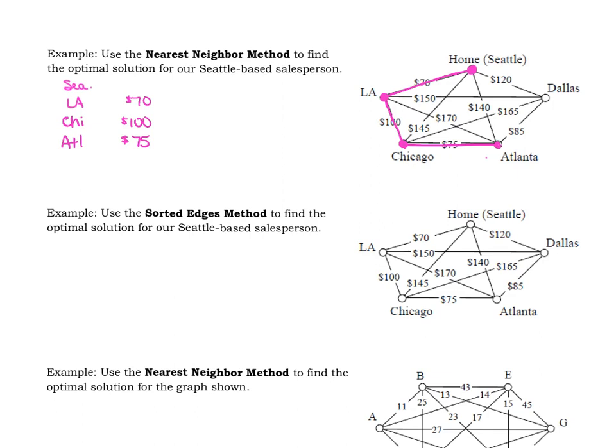And then from Atlanta, we don't have an option. We have to go to Dallas next because we have to go to every city, and it's not time to go back home to Seattle. So next, we're going to go to Dallas, even if that wasn't the cheapest option. That is the route we would take.